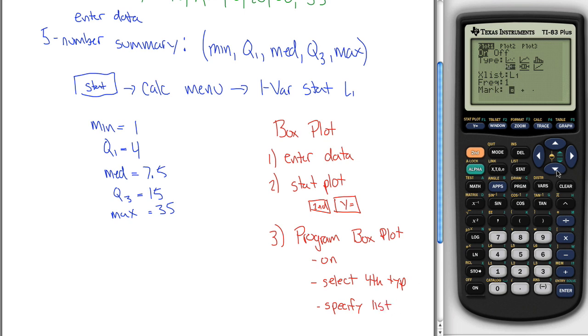tell it where your data is. Specify list, let's be a little bit more technical. So we'll specify our list. I put my values in L1, so it's already defaulted there, which is nice. But if you put it in somewhere else, you can hit second and then that list, and it'll pop up. Leave frequency alone, and the mark, if you want to change what outliers will look like, you can change that here, but you don't have to.